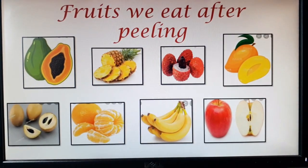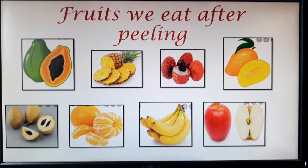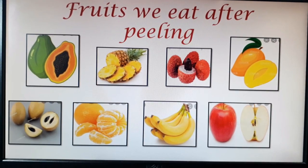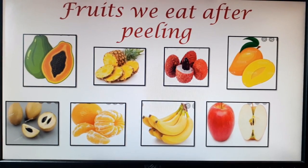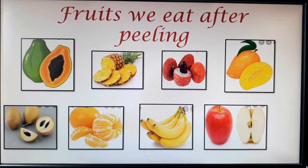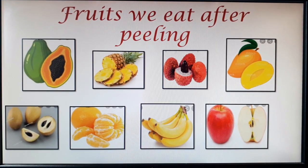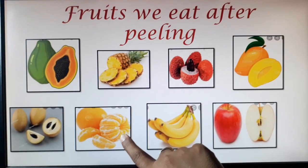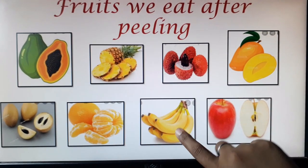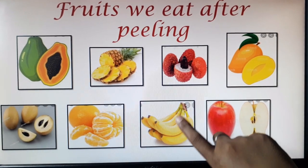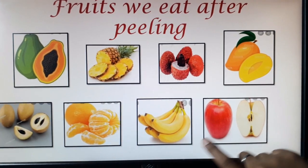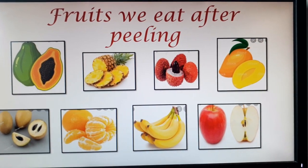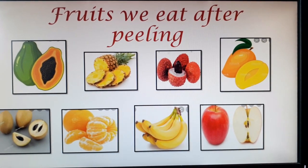Now the last is fruits that we eat after peeling — jinka ham chilka remove karte and after that we eat them. So which are the fruits? Like papaya, pineapple, lychees, mangoes, chikus, oranges. Orange is an example of the fruit that have many seeds also. Then we have bananas — it is a seedless fruit but we remove the skin, we peel it before eating. Then apples — apple is a fruit which some eat with peel but some eat after peeling. We should always peel the apple before eating.